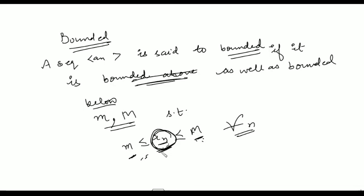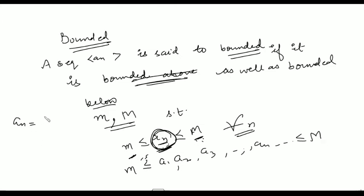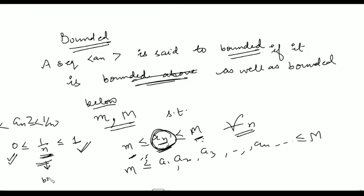All terms of the sequence — a1, a2, a3, ..., a_n — are lying between the fixed numbers small m and capital M. For example, the sequence 1/n: we know this whole sequence is lying between 0 and 1, so this sequence is bounded by the numbers 0 and 1, and therefore it is a bounded sequence.